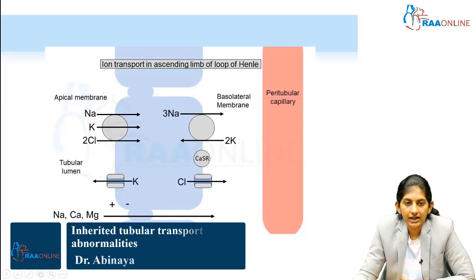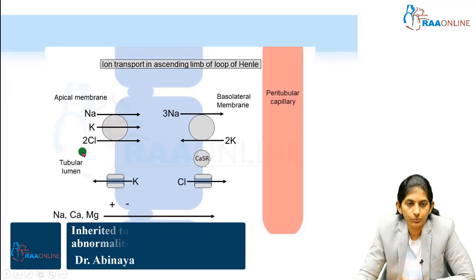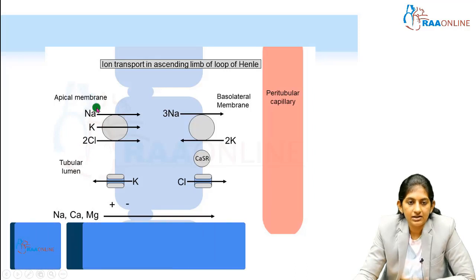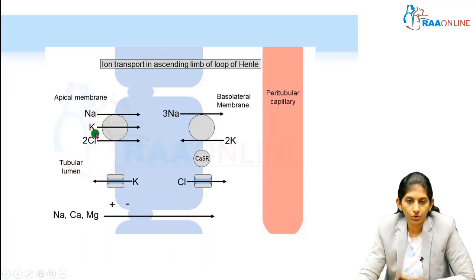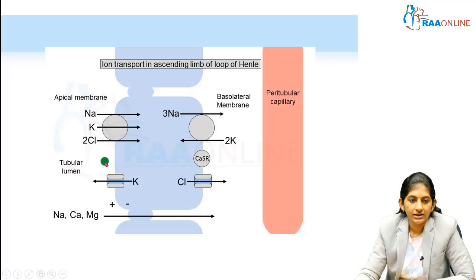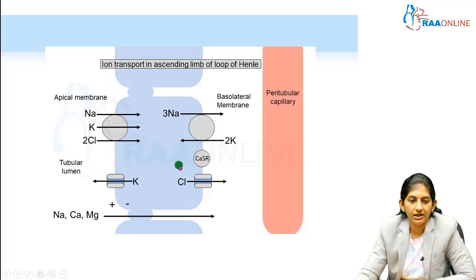Here in the ascending limb of the loop of Henle, you can see this transporter — one sodium, one potassium, two chloride co-transporter — and one more chloride transporter.